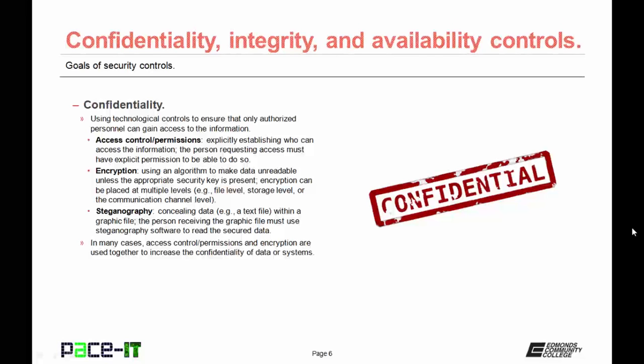Encryption can be placed at multiple levels: at the file level, the storage level, or on the communication channel. Then there's steganography — this is concealing data, as in a text file, within a graphics file. The person receiving the graphic file must use steganography software to read the secured data. In many cases, access control and encryption are used together to increase the confidentiality of data or systems.